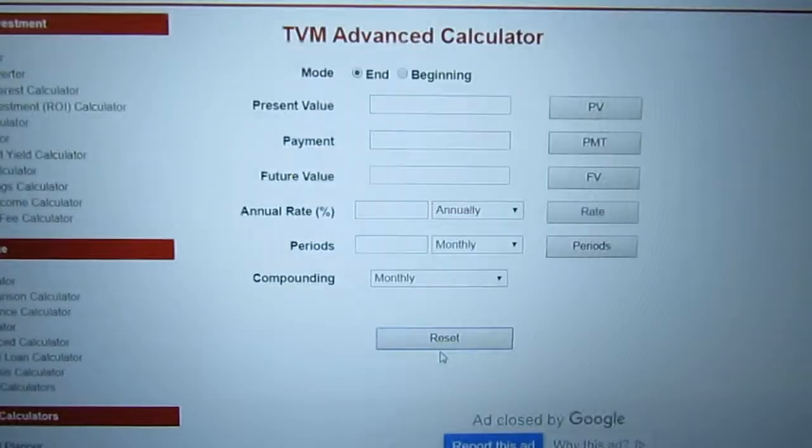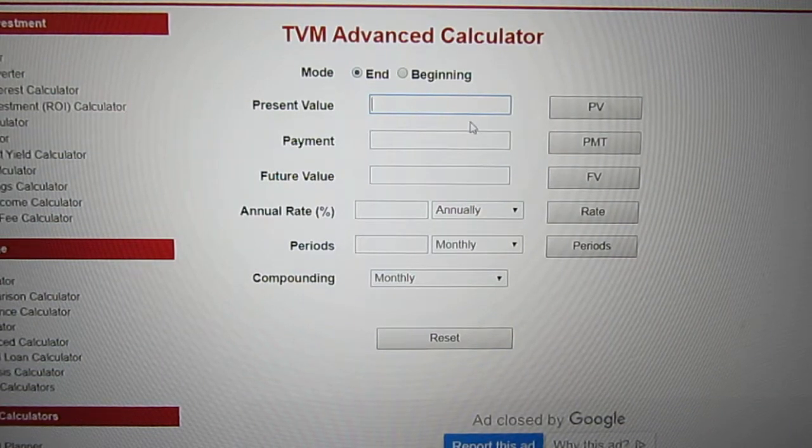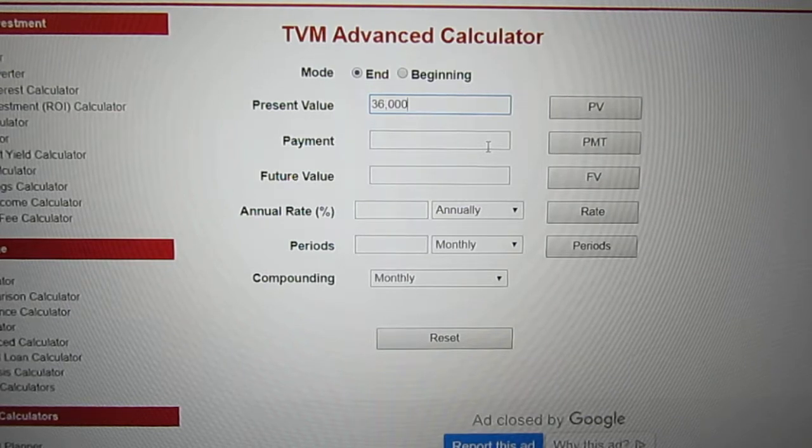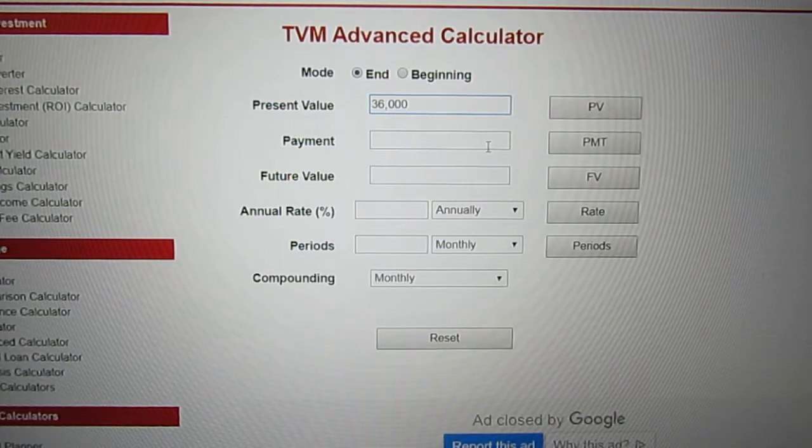So we're borrowing money for a truck. It's a $41,000 truck but we pay $5,000 up front. What's $41,000 take away $5,000? $36,000. We only have to borrow, this is our loan amount, we only have to borrow $36,000.